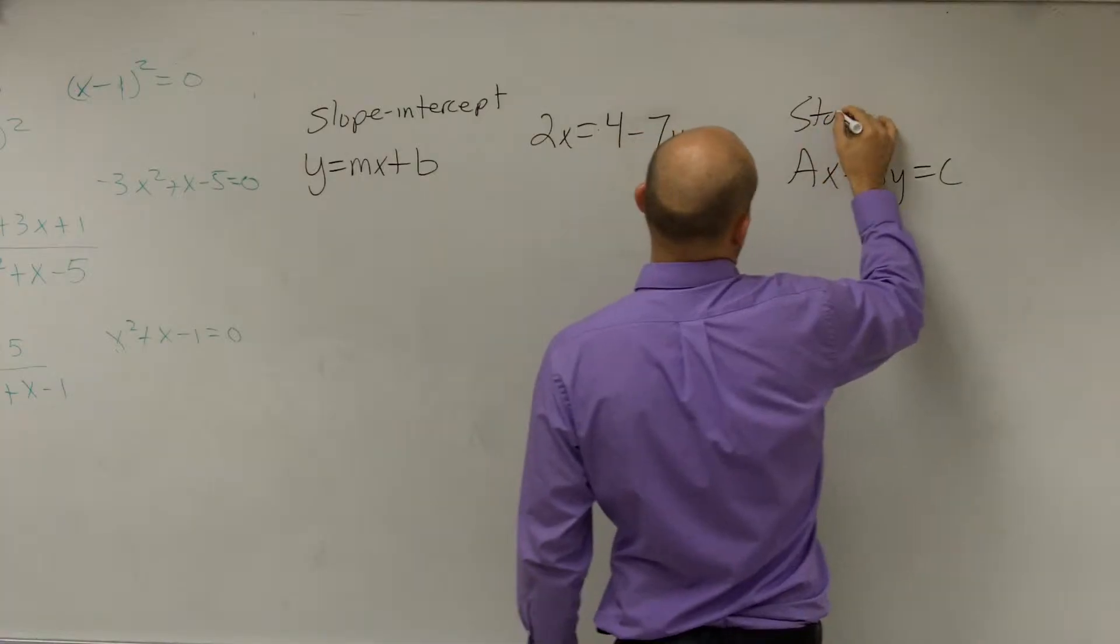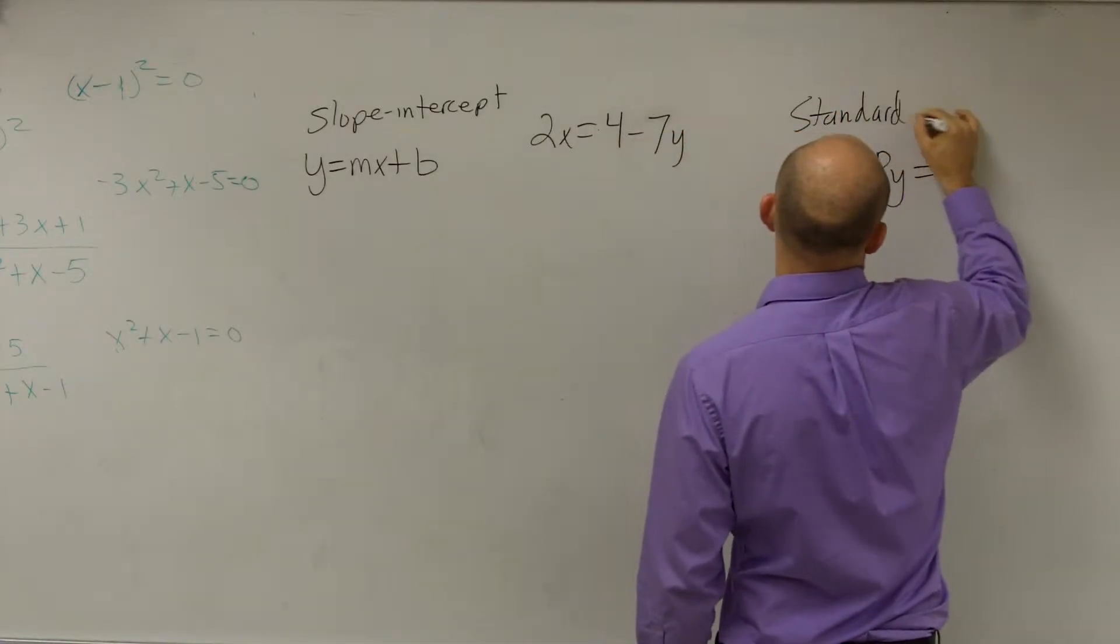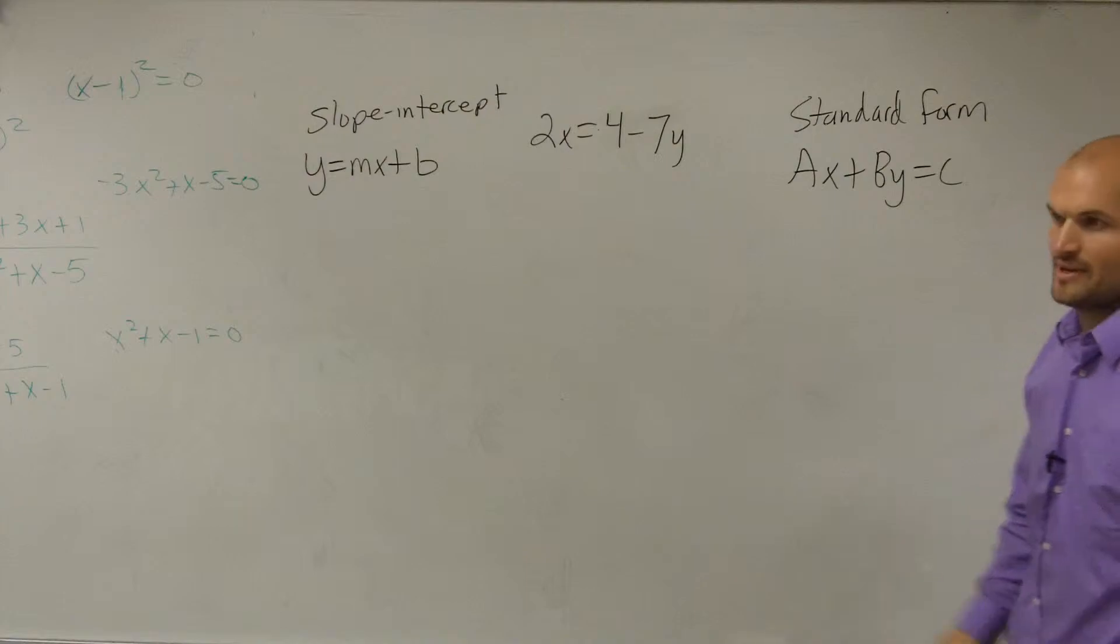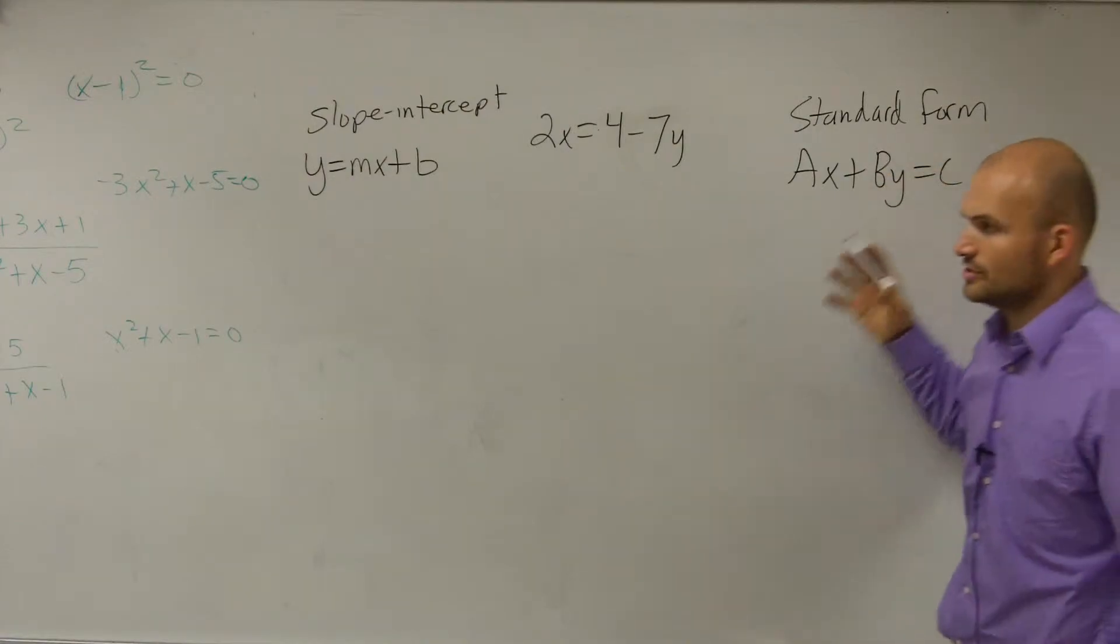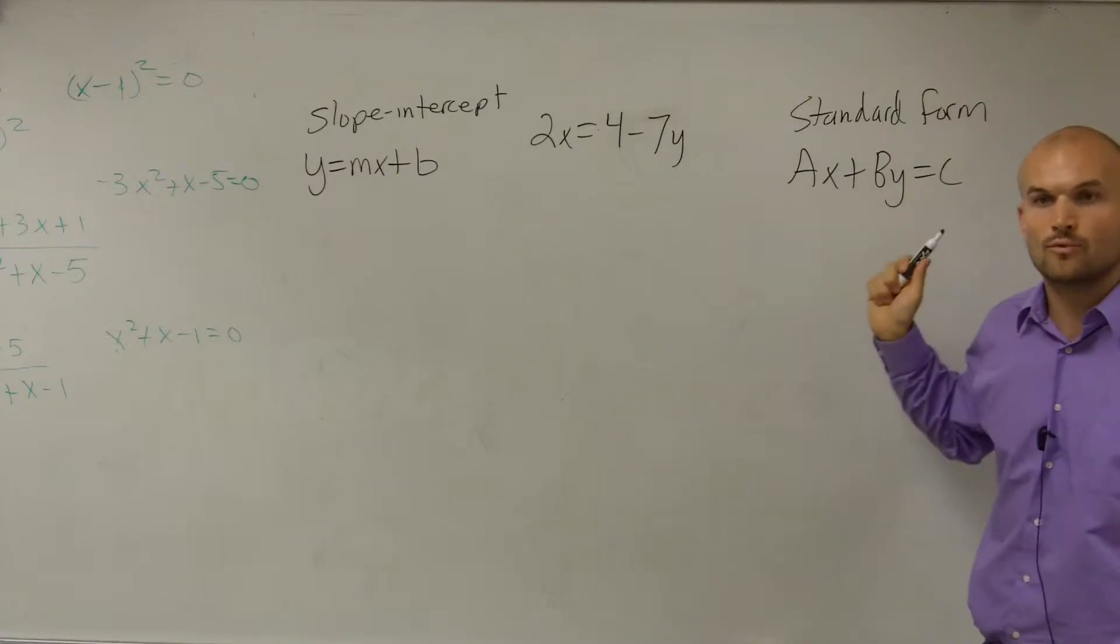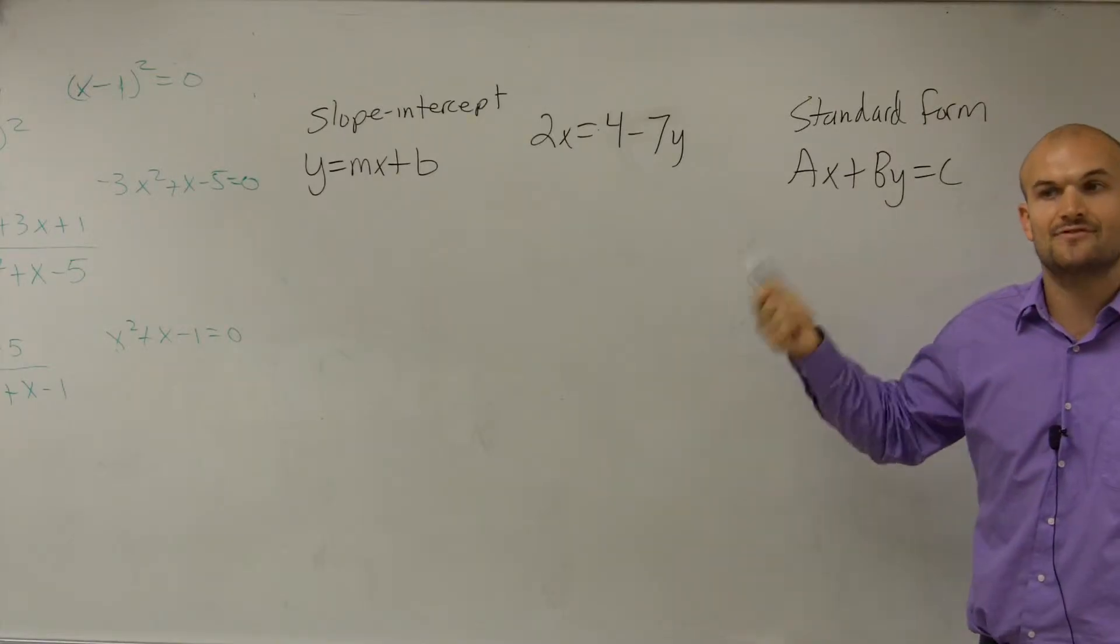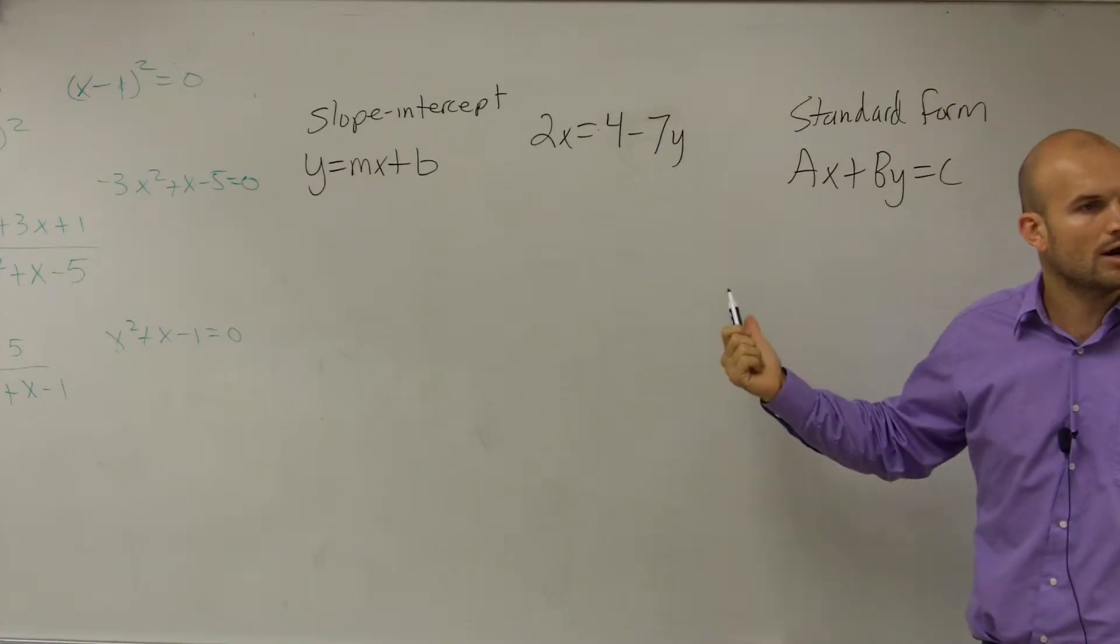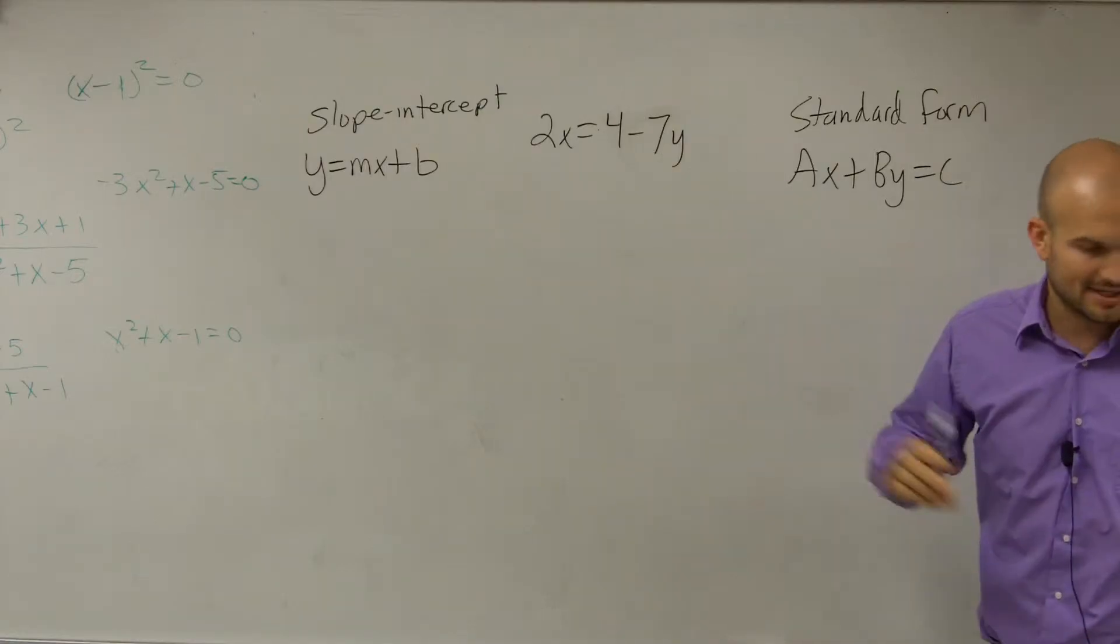This is what we call standard form. Yes, and we'll talk about that in a couple days. So this is standard form. And standard form is where A, B, and C are real numbers, all right, where they have no other common factor other than 1. And also, A and B cannot equal 0.